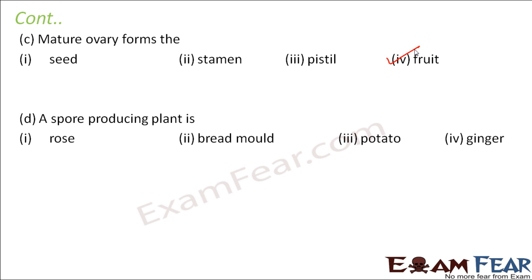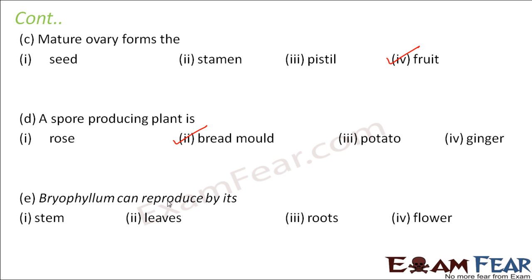A spore-producing plant — spore production is seen mostly in fungi. Bread mold is an example of a spore-producing plant. Bryophyllum can reproduce by its leaves. Bryophyllum is the miracle leaf plant — their leaves have buds, and these buds are capable of giving rise to new plants, so they reproduce by leaves.